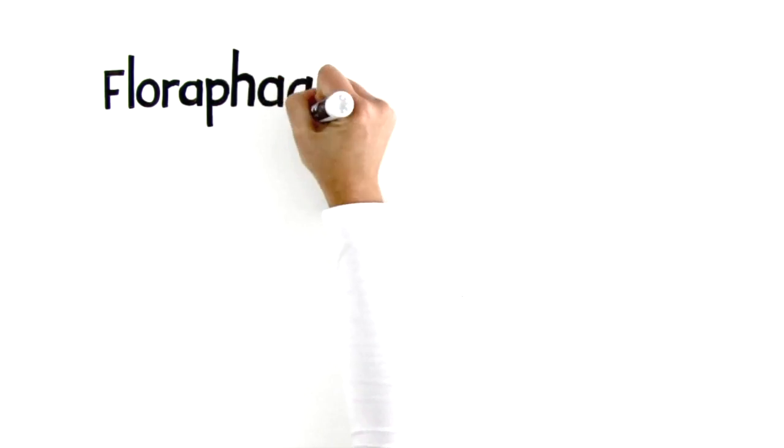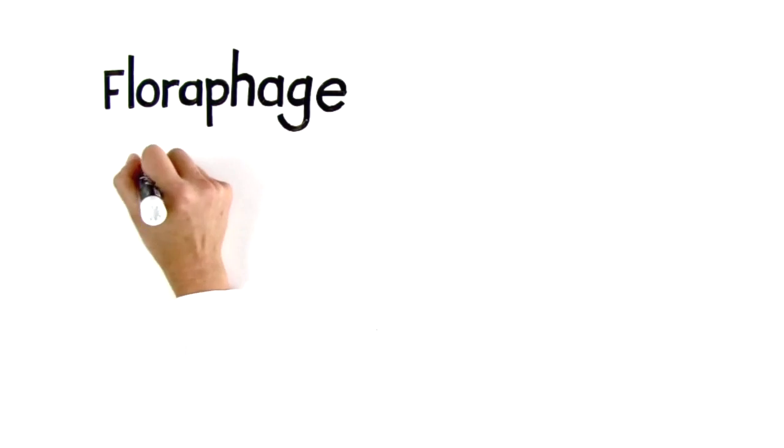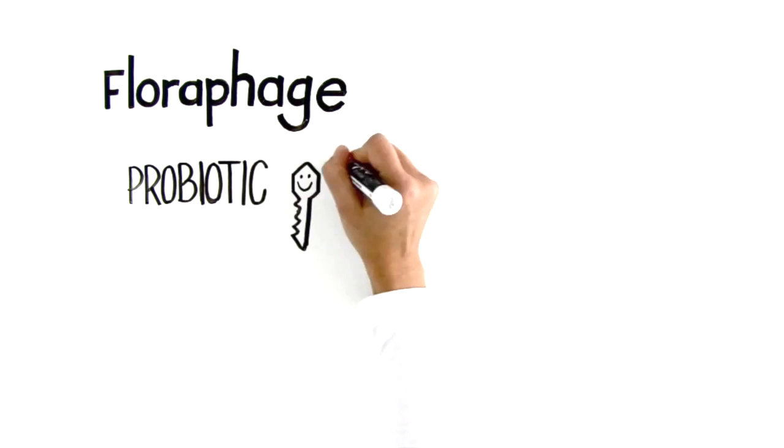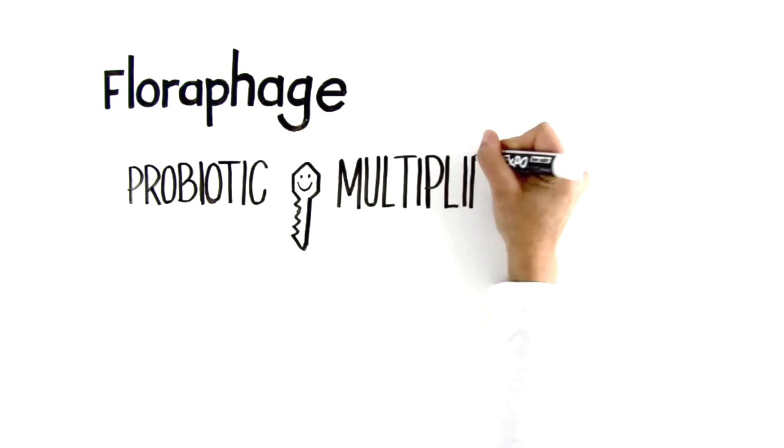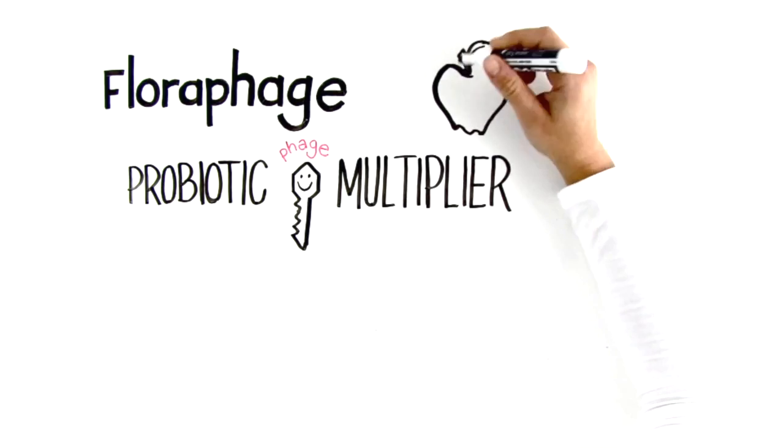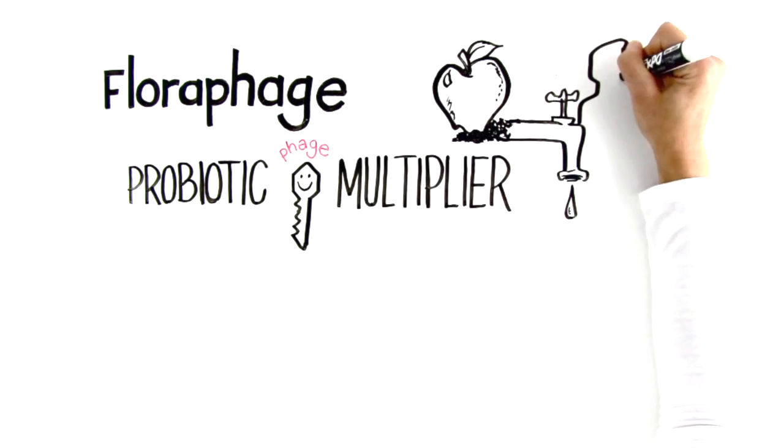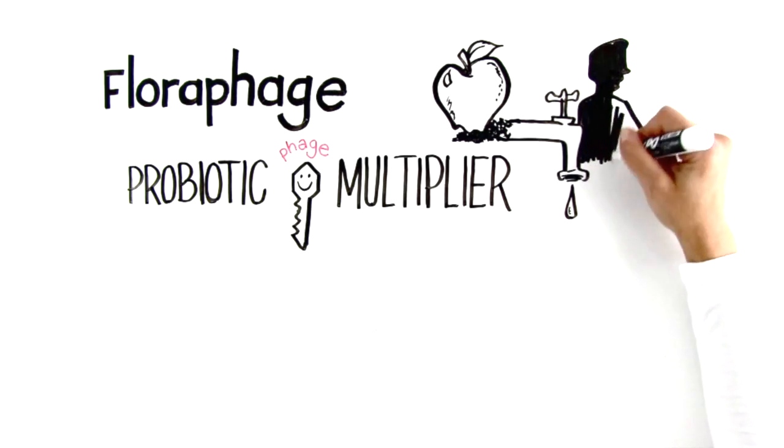Floraphage is a bacteriophage, or what's simply known as a phage, a microscopic protein that is programmed to destroy bad bacteria. Phages are everywhere: in our food, in the water we drink, on and in our bodies, and pretty much anywhere else imaginable.